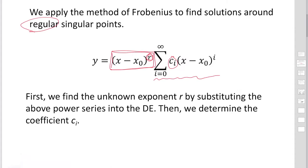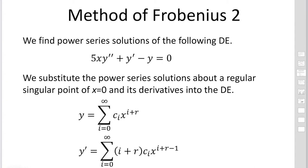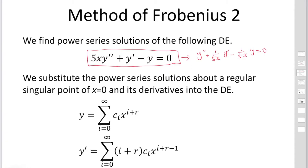We consider the differential equation 5x·y'' + y' − y = 0. We can write the standard form as y'' + (1/5x)·y' − (1/5x)·y = 0. Here P(x) = 1/(5x) and Q(x) = −1/(5x). Then x = 0 is a singular point of that equation.